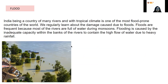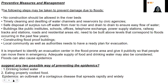Flood: India, being a country of many rivers with a tropical climate, is one of the most flood-prone countries of the world. We regularly learn about damage caused due to floods. Floods are frequent because most rivers are full of water during monsoons. A flood is caused by inadequate capacity within the banks of the river to contain the high flow of water due to heavy rainfall, causing huge loss of property. When buildings are constructed on river banks, there is no capacity for the river, water overflows, and there is loss of property and life near water bodies.